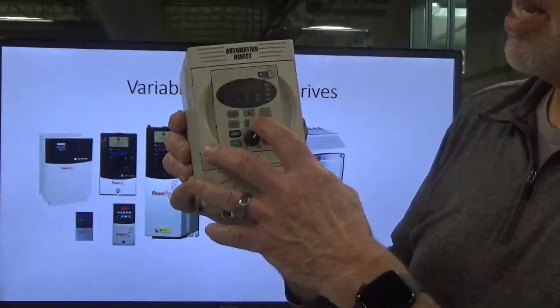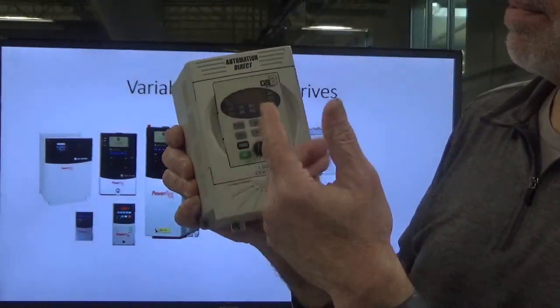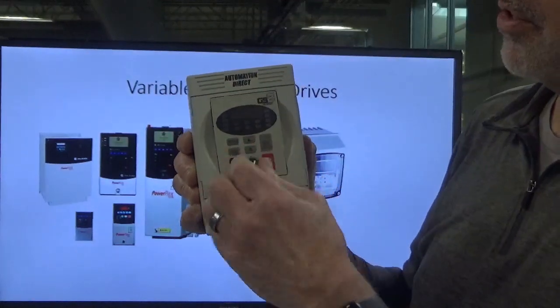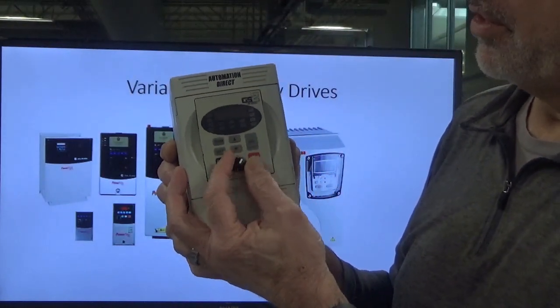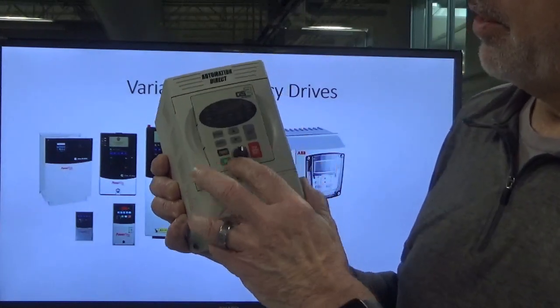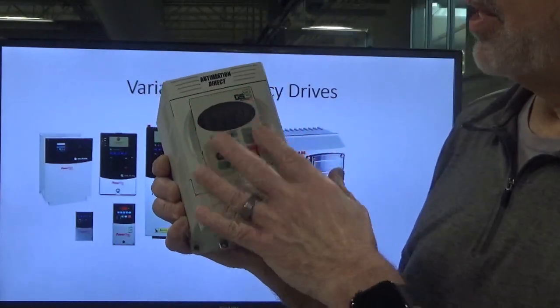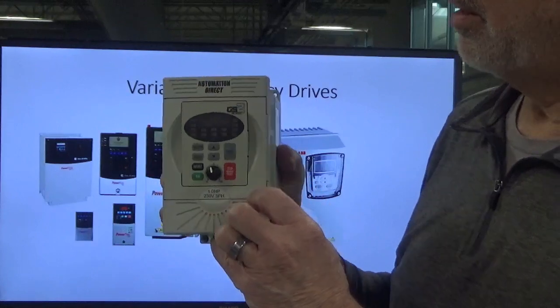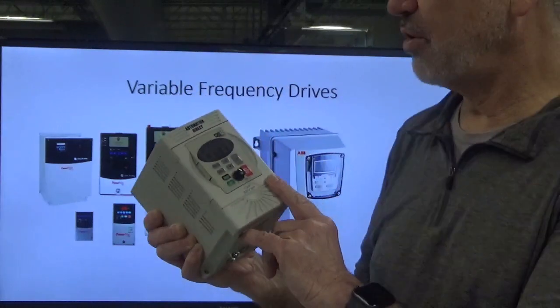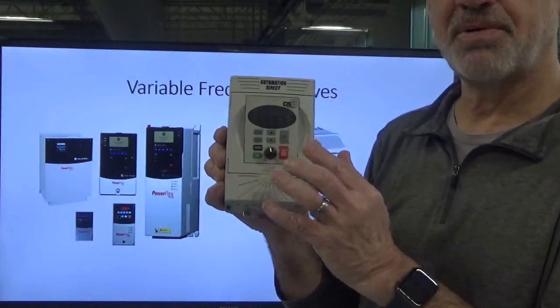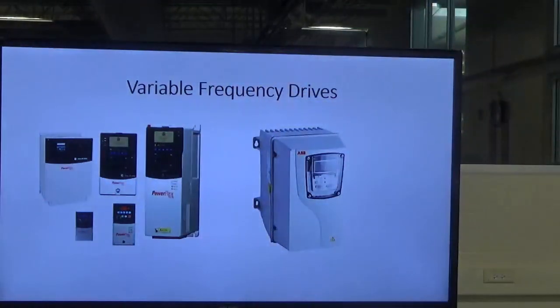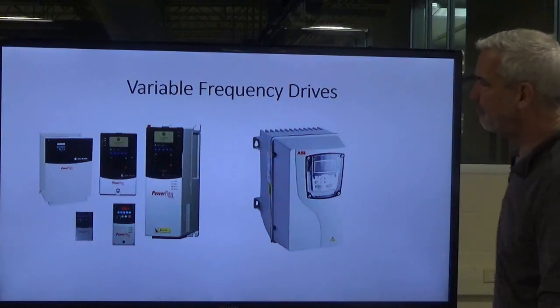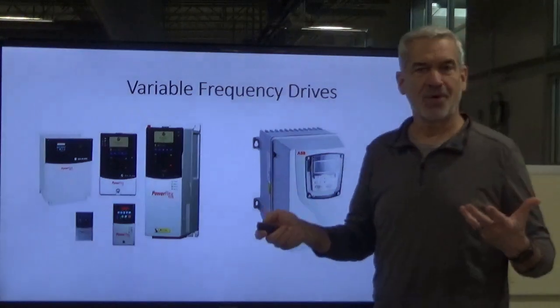It's a couple hundred bucks, and you can ramp the speed up and down with a keypad with arrows. You can turn the knob and dial the variation of the output to the motor, turn it on and off. There's no communication on this particular drive, so we have to control it with start and stop push buttons or the keypad itself. They come in all shapes and sizes and different costs. Obviously, the more features, the more expensive.